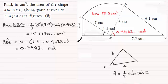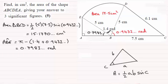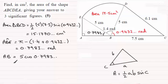Now I've got that angle — 0.7983 radians — I can use trigonometry in triangle ABE. I have the hypotenuse, I have this angle, and I want the adjacent side AB. So cos(0.7983) = AB / 5, which rearranges to AB = 5 × cos(0.7983). Make sure your calculator is in radians mode — you should get AB = 3.4892 centimetres.